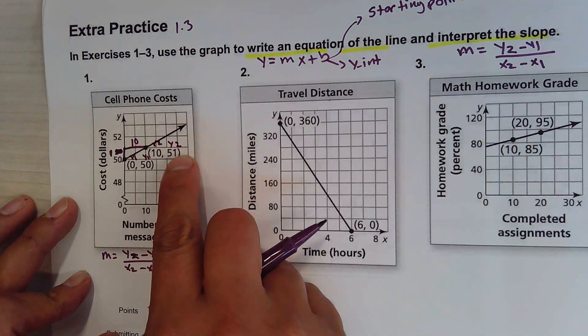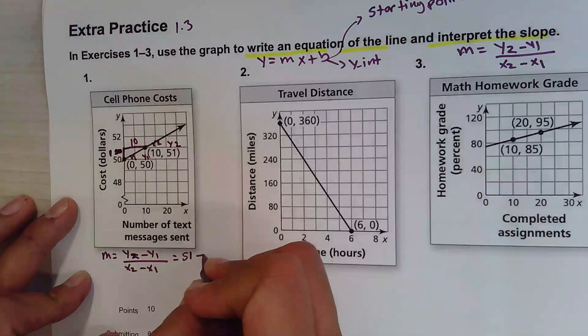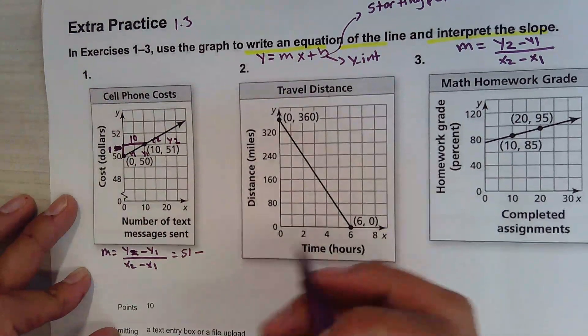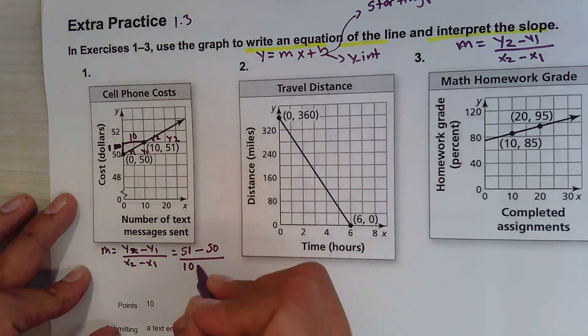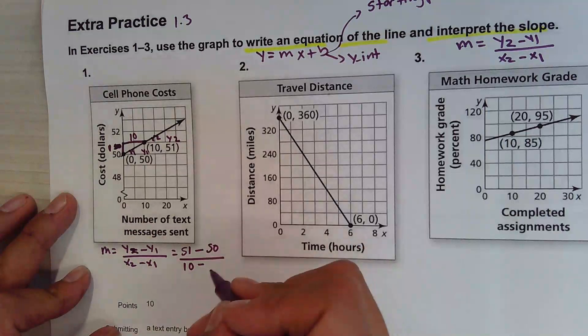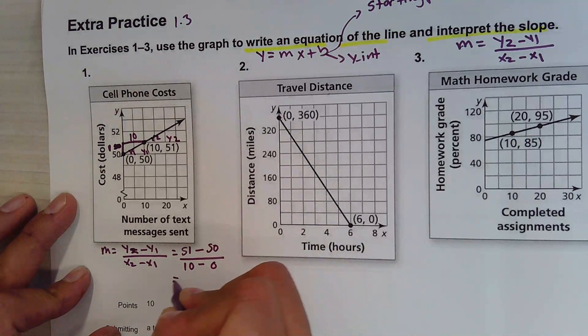y2 is 51, y1 is 50, x2 is 10, and x1 is 0, 50.